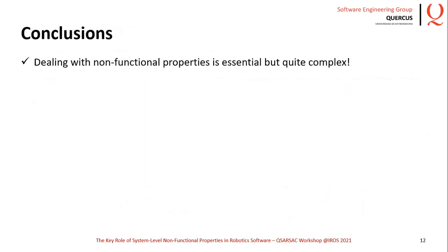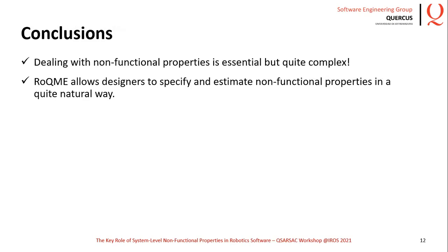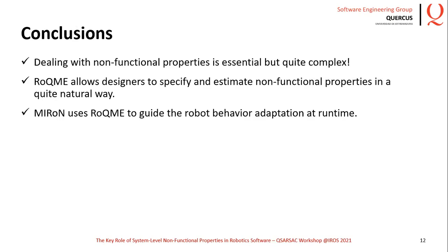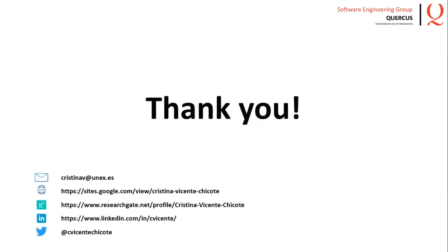To wrap up, we can conclude that dealing with non-functional properties is essential but quite complex. ROGMI allows the designer to specify in a quite natural way which non-functional properties are relevant in a particular scenario and which situations may affect them and to what extent. From this specification, the ROGMI toolchain automatically generates a software component that monitors the context and provides quality of service metrics estimation for each of these non-functional properties based on the perceived situation. The quality of service metrics provided by ROGMI have been successfully used by Miron to guide robot behavior adaptation at runtime. Thank you very much for your attention.